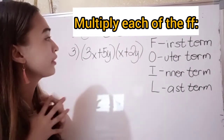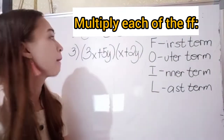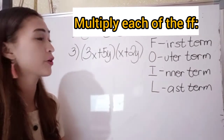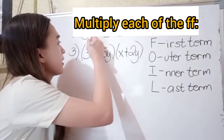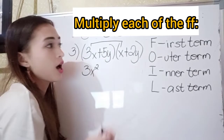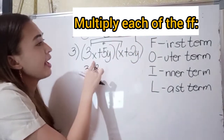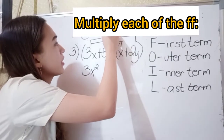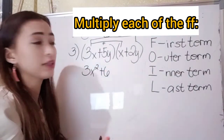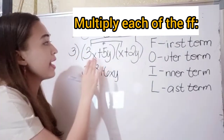For number 3, we have 3x plus 5y times x plus 2y. Using the FOIL method: the first term is 3x times x, which is 3x squared. The outer term is 3x times 2y: 3 times 2 is positive 6, and since we have different variables x and y, we write 6xy.